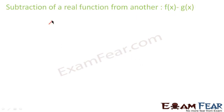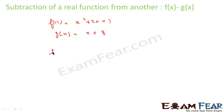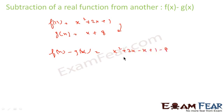For subtraction of real functions: if f(x) = x² + 2x + 1 and g(x) = x + 8, then f(x) minus g(x) = x² + 2x minus x + 1 minus 8, which simplifies to x² + x minus 7. This is f(x) minus g(x).